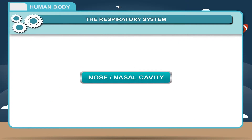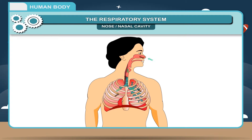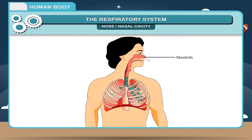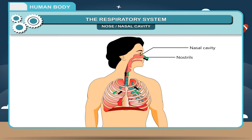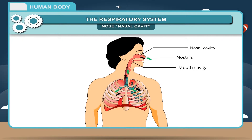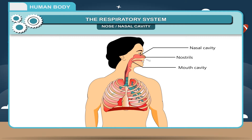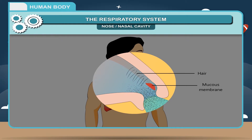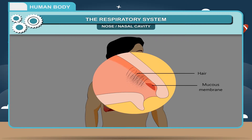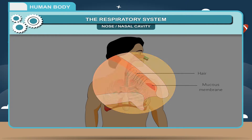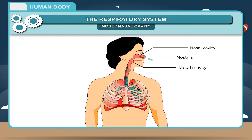Nose or nasal cavity. The air enters into the body through the nose. The openings of the nose are called nostrils. Nostrils open into the nasal cavity, which is separated from the mouth cavity by the palate. The hairs and the mucous membrane inside the nose help in filtering the dust particles. The nose regulates the temperature of air according to the body temperature and also moistens it. The nasal cavity leads into the pharynx.